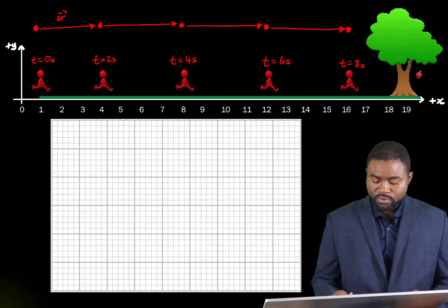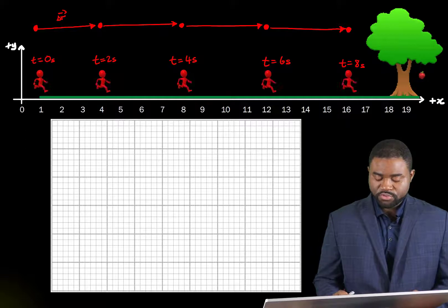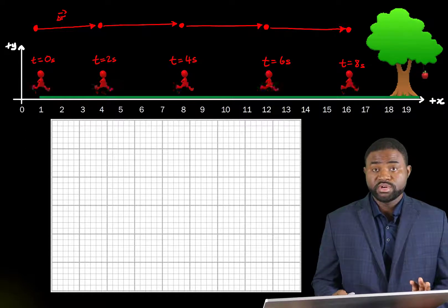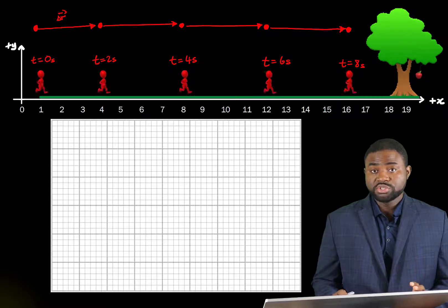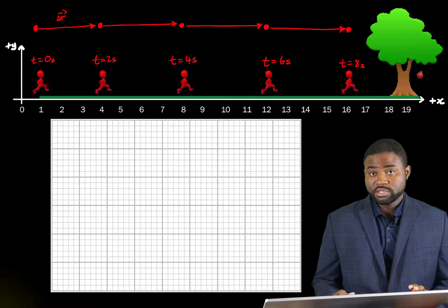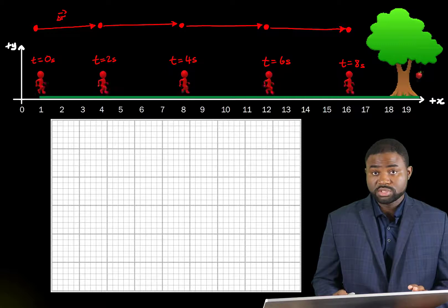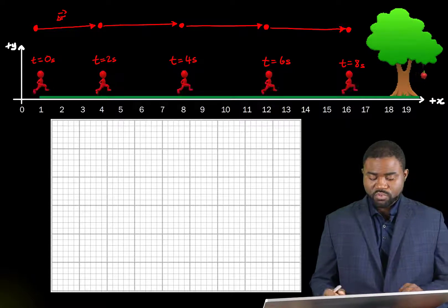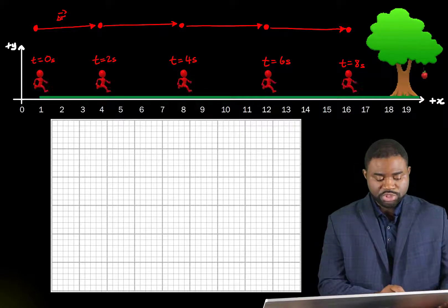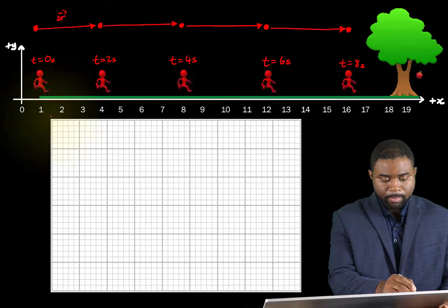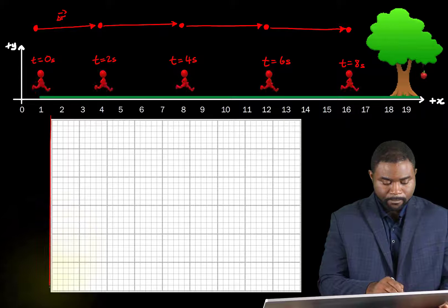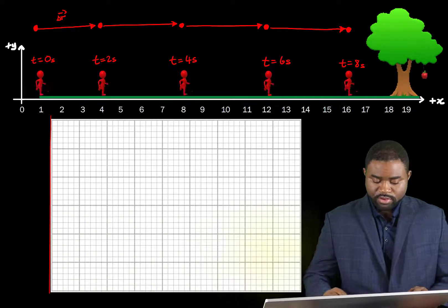So another way for us to represent his motion is to use graphs. Now motion graphs are drawn in such a way that time always occupies the x-axis or the horizontal axis. In this case, we are going to draw a graph of position against time.